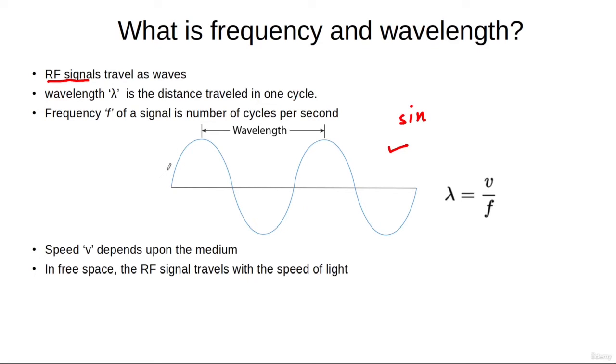And this wave repeats itself after one cycle. For example, from here to here we have a cycle after which this wave is repeating itself. Or we can also take a cycle from here to here between these two peaks.